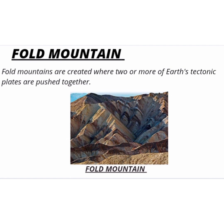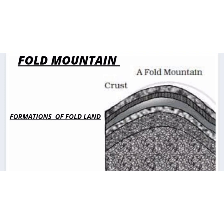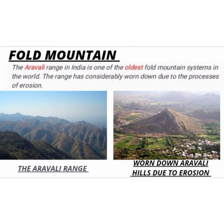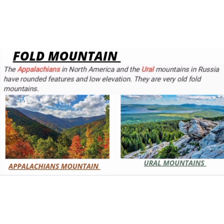Fold mountains are created where two or more of the earth's tectonic plates are pushed together. Examples include the Himalayan mountains and the Alps, which are young fold mountains with rugged relief and high conical peaks. The Aravalli range in India is one of the oldest fold mountain systems in the world and has considerably worn down due to erosion. The Appalachians in North America and the Ural mountains in Russia have rounded features and low elevation — they are very old fold mountains.